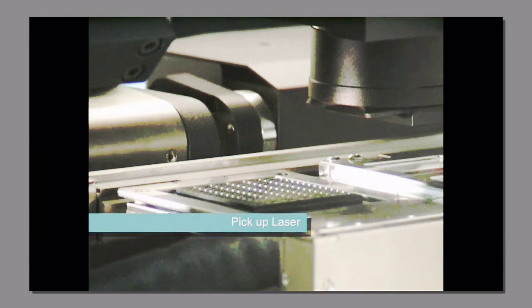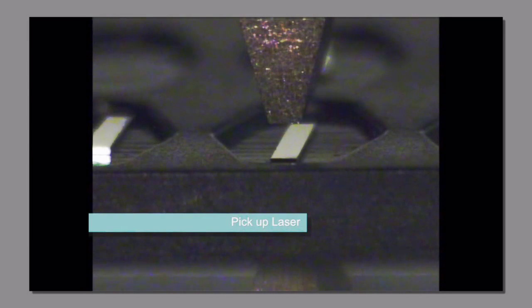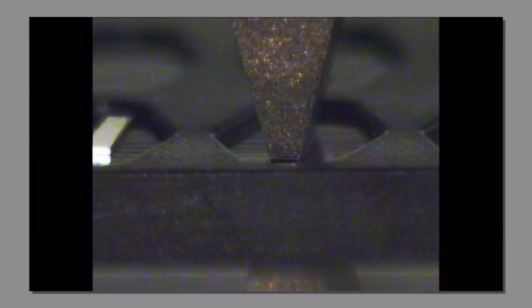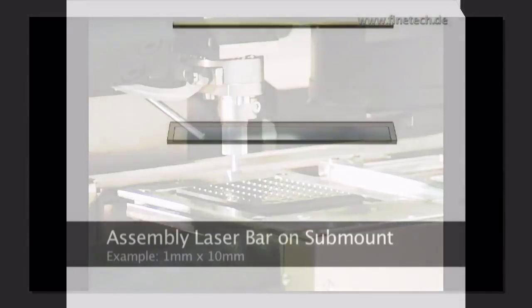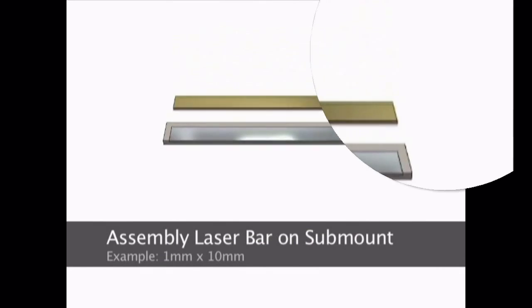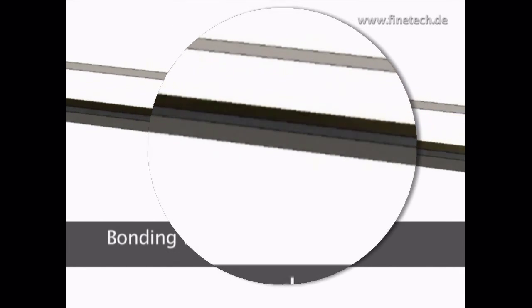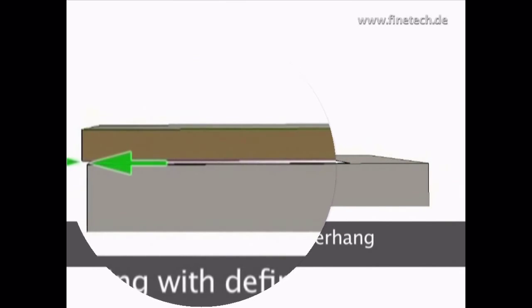Next, the laser bar is picked from waffle or gel pack by either a heated or unheated tool, depending on the subsequent process steps. The laser bar is mounted onto the heat sink, taking care to allow for the desired degree of overhang.